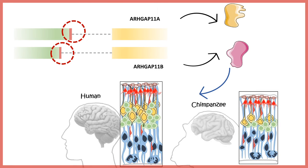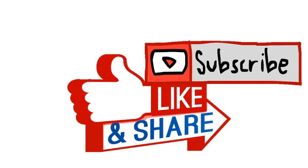RGAP11B, active in our genome for five million years, works in a pathway regulating cortical volume. Comparing human and chimpanzee brains, humans have a much thicker cortex with far more neurons. RGAP11B acts in stem cells to ensure they proliferate more and generate more neurons, giving humans significantly greater cortical volume — an accident of alternative splicing that likely made us human.